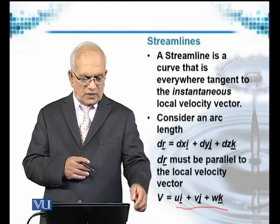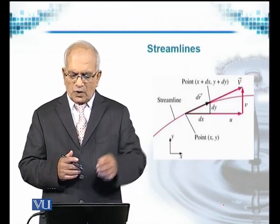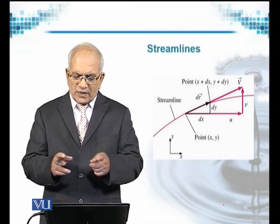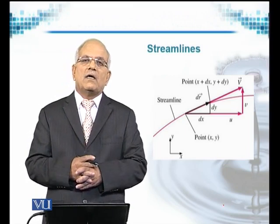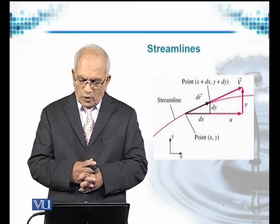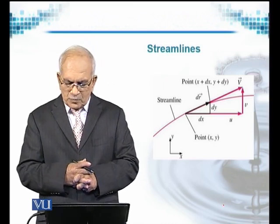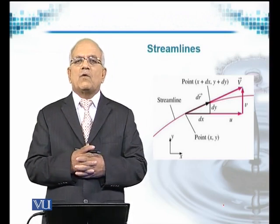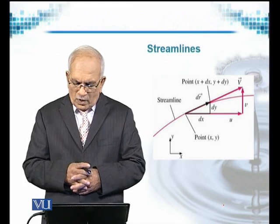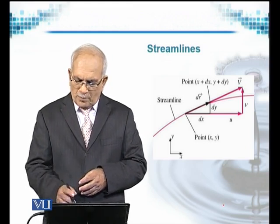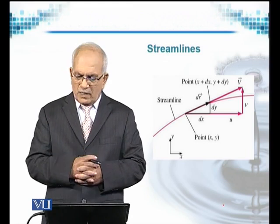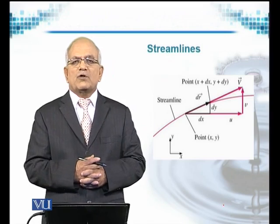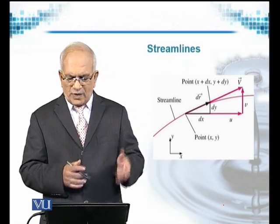A streamline is a line that is tangent to the local velocity vector everywhere. Here we consider an arbitrary control volume and a fluid point. We would like to draw a picture of how a streamline will look. If we denote a particle by a point (x, y), for the moment we are considering a two-dimensional motion instead of a three-dimensional motion.